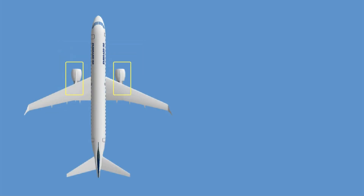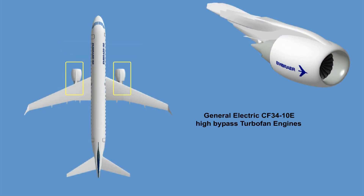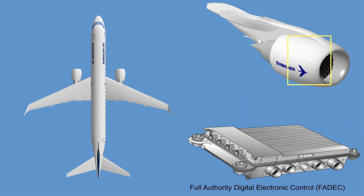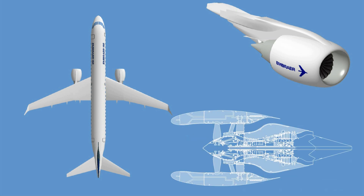Two wing-mounted CF34-10E high-bypass turbofan engines are installed on the Embraer 190. Engine controls and fuel scheduling are provided by a Full-Authority Digital Electronic Control (FADEC) with fully modular design. The CF34-10E incorporates the aerodynamic efficiency of a wide-chord fan, which produces most of the engine's 18,500 pounds maximum thrust.